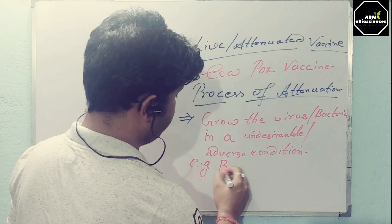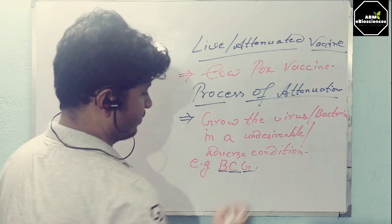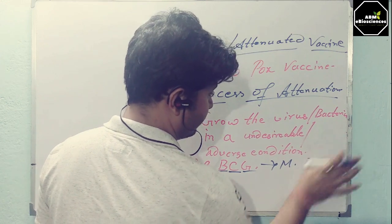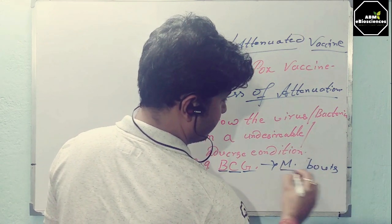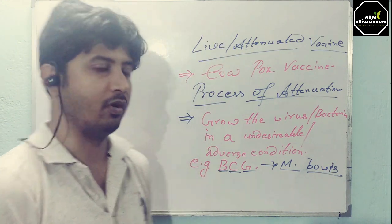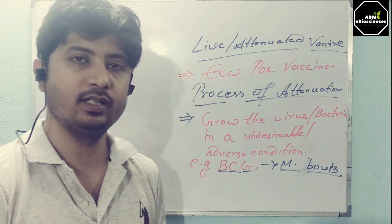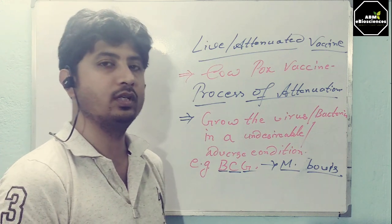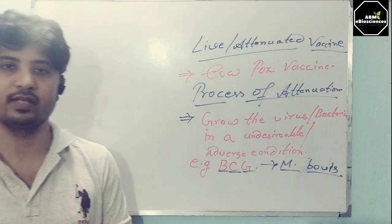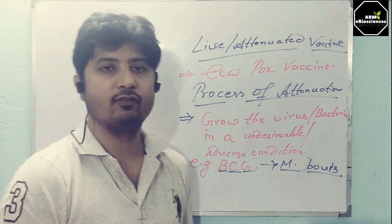For example, BCG — Bacillus Calmette-Guérin — is a form of M. bovis. Mycobacterium bovis is a pathogenic form of the bacteria. If you grow that bacteria in adverse conditions in a medium where it is not normally used to grow, it forms a strain called Bacillus Calmette-Guérin, which is still used as a vaccine for tuberculosis.